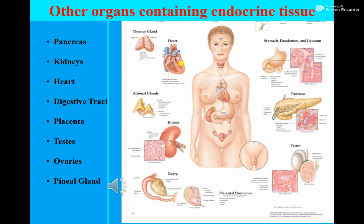In our body, there are some organs which contain groups of cells or tissue that perform functions as endocrine glands. These are not major endocrine glands, but they secrete chemical substances known as hormones, so on the basis of hormone secretion, they act like endocrine glands. These include the pancreas, kidney, heart, digestive tract, placenta, testes, ovaries, and pineal gland.